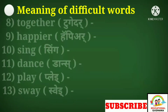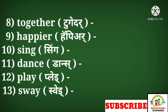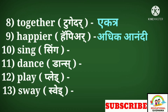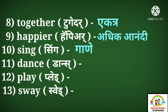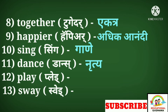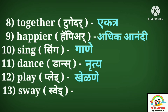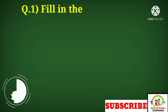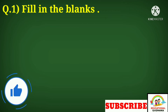Seven: 'more' means adhik. Eight: 'together' means ekatra. Nine: 'happier' means adhik anandi. Ten: 'sing' means gane. Eleven: 'dance' means nrutya. Twelve: 'play' means khirne. Thirteen: 'sway' means helkave khane. Now, question number one: fill in the blanks.